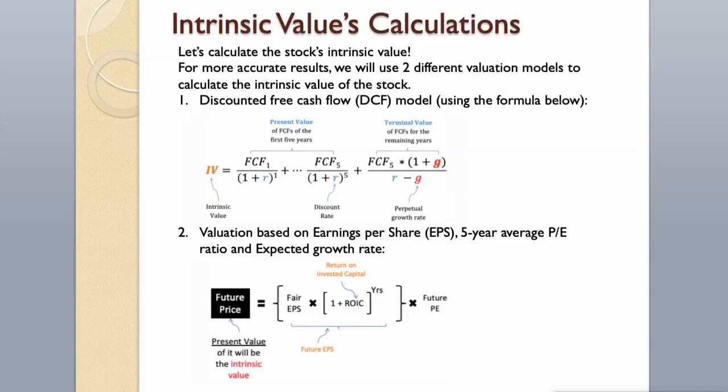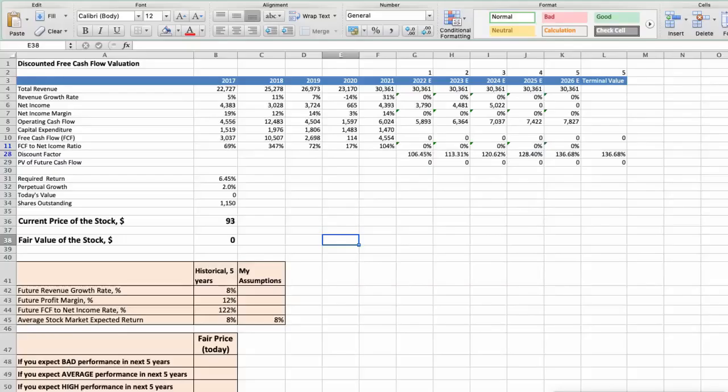For more accurate results, we will use two different valuation models to calculate the intrinsic value of the stock: the discounted free cash flow model using the formula below, and then valuation based on earnings per share, 5-year average P/E ratio and expected growth rate. First model: Discounted free cash flow valuation.